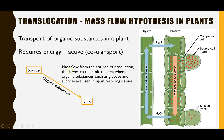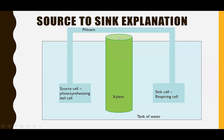Let's think about this source-to-sink mass flow hypothesis in more detail using a basic model. We have our source cell — a leaf cell that is photosynthesizing — connected to a sink cell, which is any respiring cell. The phloem is always next to the xylem, which transports water. In this model, think of a tank of water representing all the surrounding plant cells around the leaf and respiring cells.